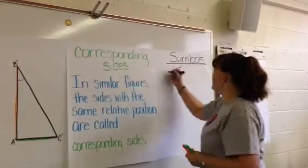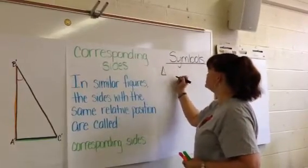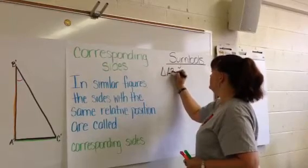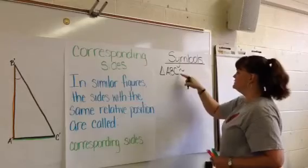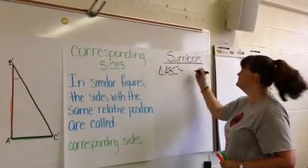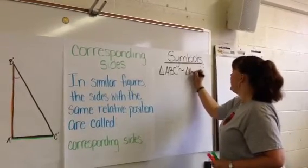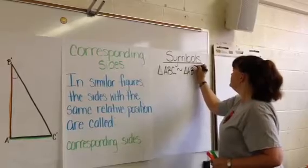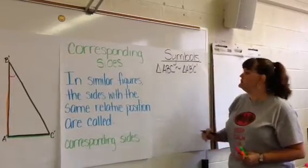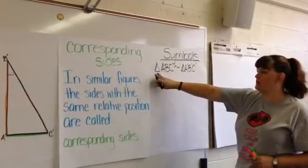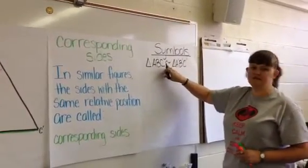you may see it in writing as triangle ABC is similar, which is the little squiggle line, to triangle A'B'C'. Okay, so not only have you gotten the triangle symbol, but also the similarity symbol.